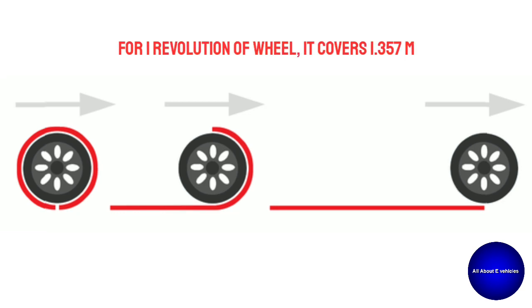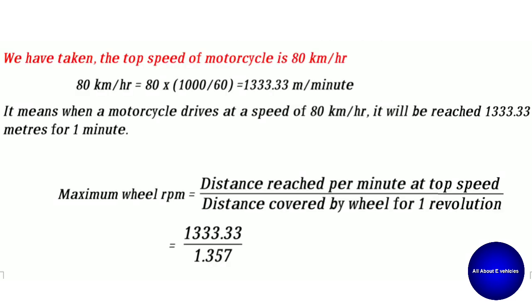This picture clearly shows the wheel rotation — for one revolution of the wheel, the distance covered is 1.357 meters. We have taken the top speed of the motorcycle as 80 kilometers per hour. Converting it into meters per minute, we get 1333.33 meters per minute. This means when the motorcycle drives at 80 km/h, it travels 1333.33 meters in one minute. The maximum wheel RPM is given by the ratio of the distance reached per minute at top speed to the distance covered by the wheel for one revolution.